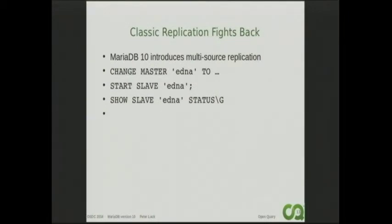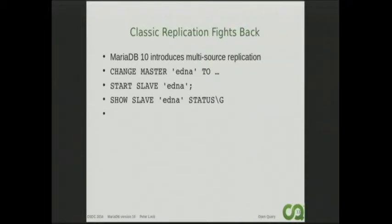Classic replication fights back. With version 10 of MariaDB, there are new classic replication features. We've got parallel updating — running multi-threaded updates on the slave — which means we don't really get the slave lag problems we used to get. So slave lag is fixed with parallel replication. We've also got global transaction IDs, which help with the repointing issue where you're pointing your slaves from one master and have to repoint them to another. That's a new feature in MariaDB 10 that solves some of those problems.